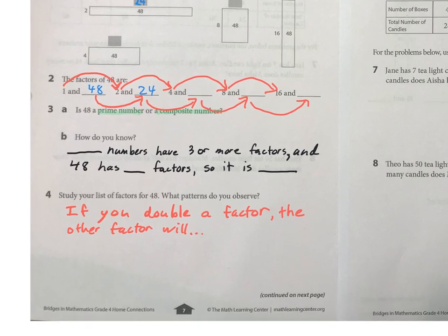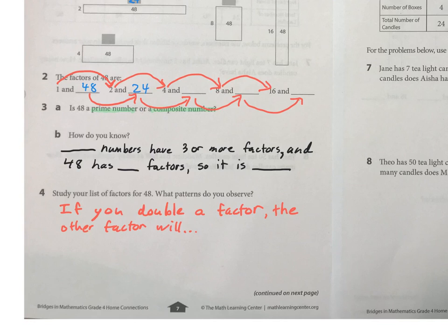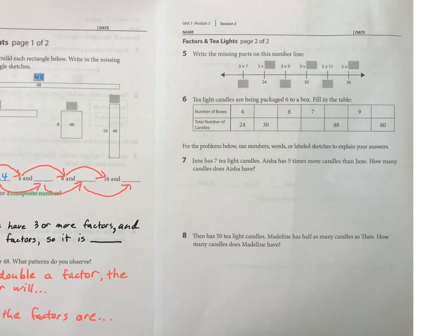You might also notice that most of the factors are either odd or even. So which one is it? Look at your list of factors and are more of them odd or even. Let's finish this up.